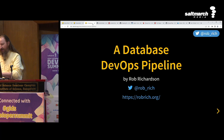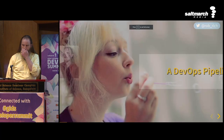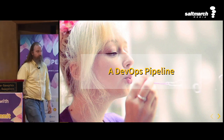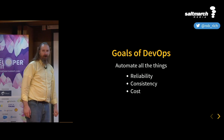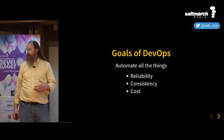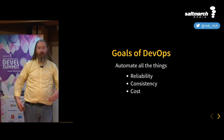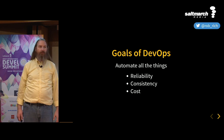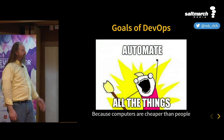So let's talk about a database DevOps pipeline. First, let's talk about a DevOps pipeline. A DevOps pipeline — our goal is to build reliability, consistency, reduce cost. We create that automation so that we can start to create very predictable results from our build process. Automate all the things!